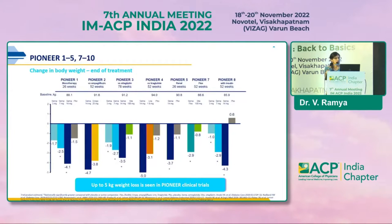Looking at the change in body weight across all Pioneer trials — compared to empagliflozin in Pioneer 2, sitagliptin in Pioneer 3, and liraglutide in Pioneer 4 — there is a significant weight loss with oral semaglutide, greater than the other drugs. Up to 5 kg of weight loss was seen across the Pioneer series of trials.